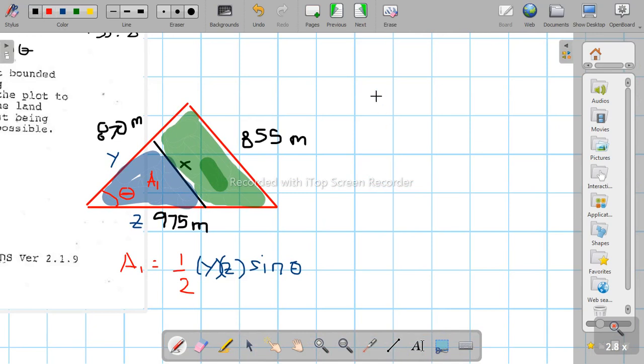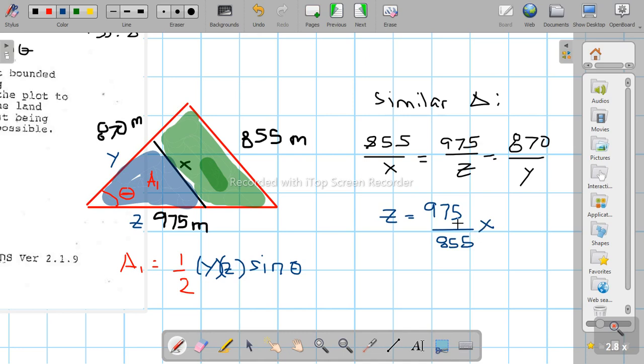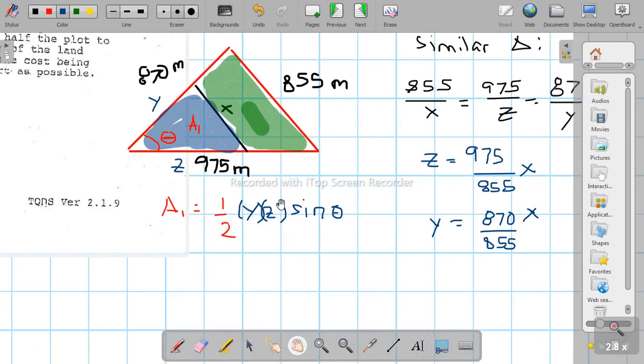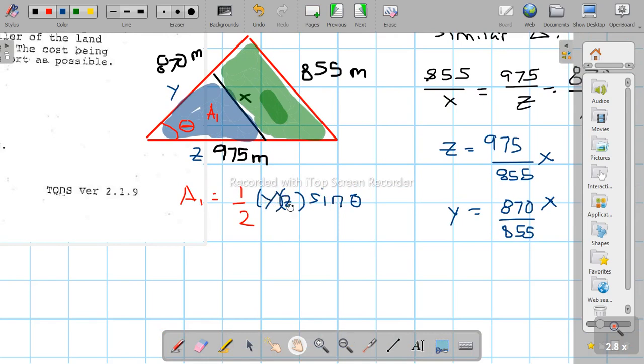By similar triangles, we can set up proportions. 855 over X equals 975 over Z. Since X is what we're finding, we can express Z and Y in terms of X. Z equals 975 over 855 times X.